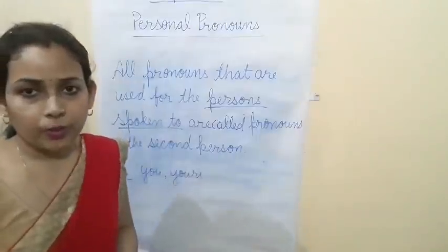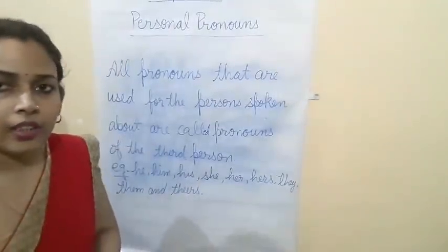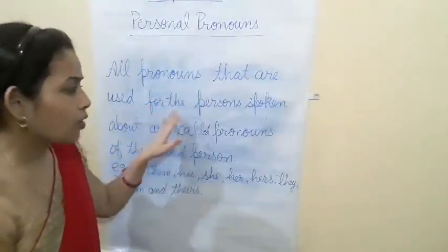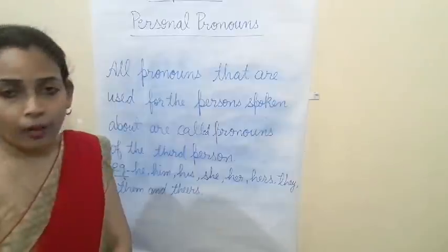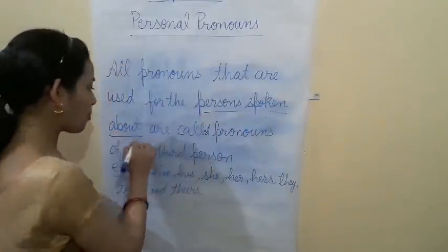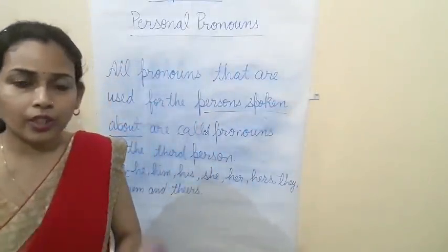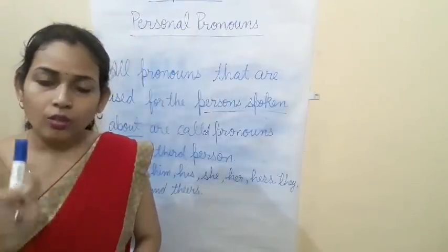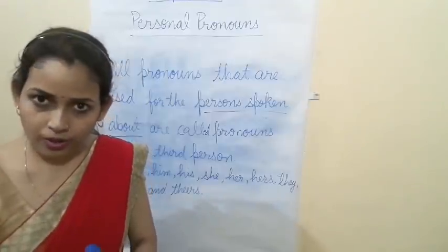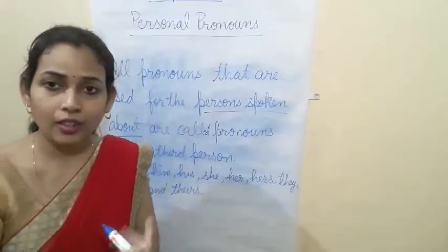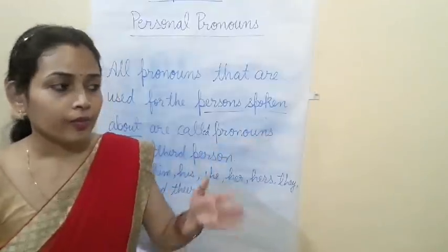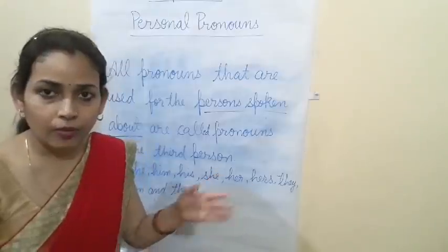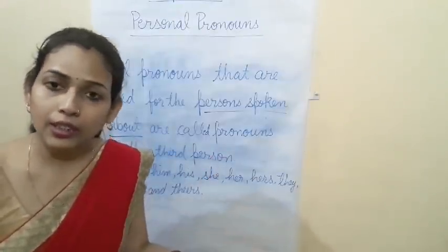Third person: all pronouns that are used for the person spoken about are called pronouns of the third person. When we talk about somebody else — 'She is very good', 'He is very good', 'They are going' — those are third person. I am speaking: first person. Talking to you: second person. Talking about someone else: third person.